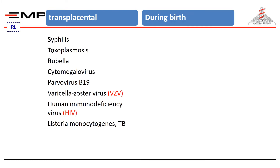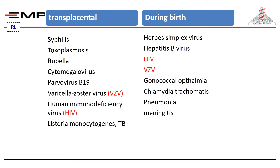The third route is infection through passage of an infected birth canal. This includes herpes simplex virus, hepatitis B virus, HIV, varicella-zoster, and others.